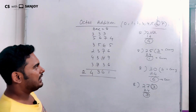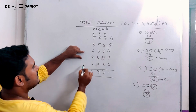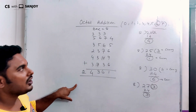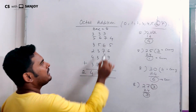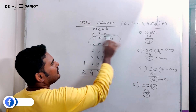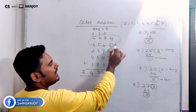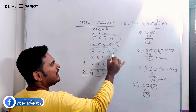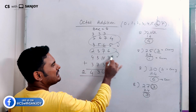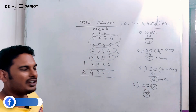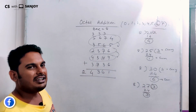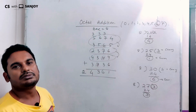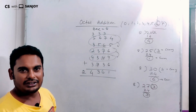So, this is the result we obtained. This is the octal number addition. We added the numbers column by column, dividing by 8 each time to get the sum digit and carry. However, this method is very time-consuming.